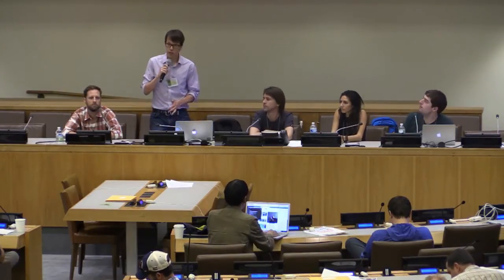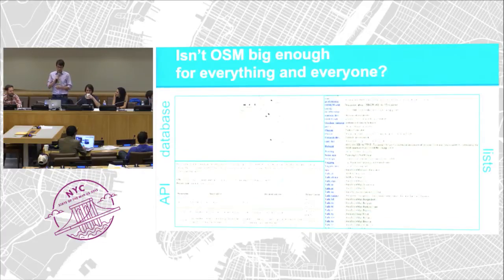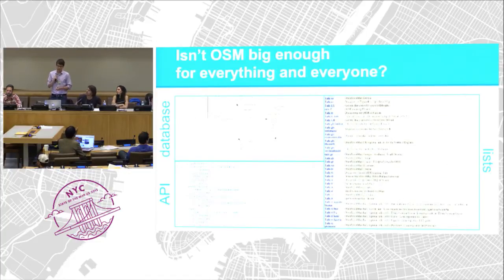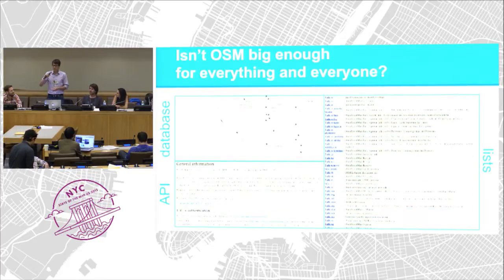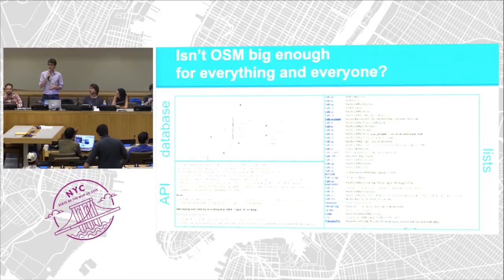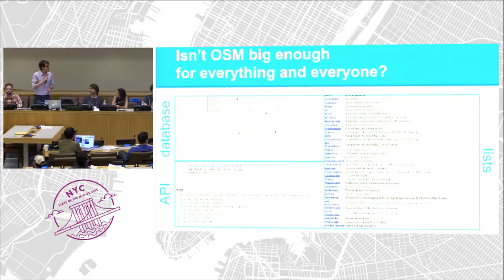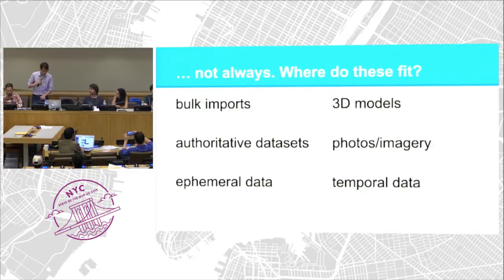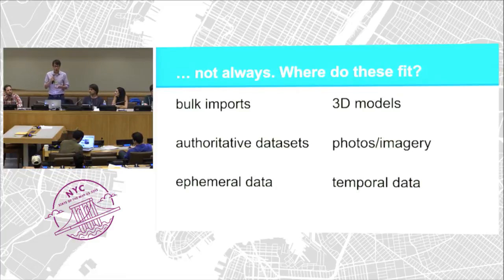So just to set the stage: isn't OSM big enough for everything under the sun? It has a very large data model, very flexible, it has an even longer API doc, and to go with each of these bits of technical functionality, there's a mailing list or three mailing lists. So shouldn't there be room for everything within OSM proper?